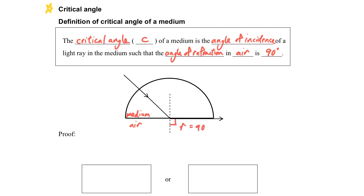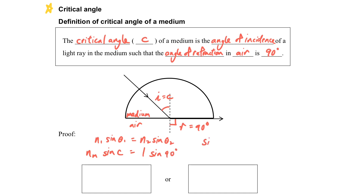Suppose the light travels from the optically dense medium to the air, and the refracted angle R is 90 degrees. We say that at this very moment, the angle of incidence I is just equal to C. So by applying n1 sin θ1 = n2 sin θ2 — which we discussed many times in chapter 2.1 — we can substitute the different values. Here NM is the refractive index of medium M. Since sin 90 equals 1, we can formulate the equation. To summarize: sin C = 1/N, or equivalently N = 1/sin C.